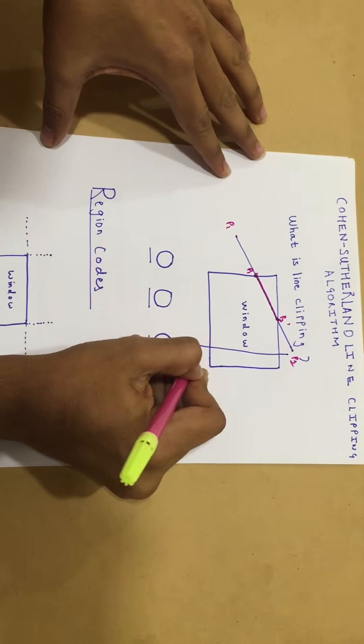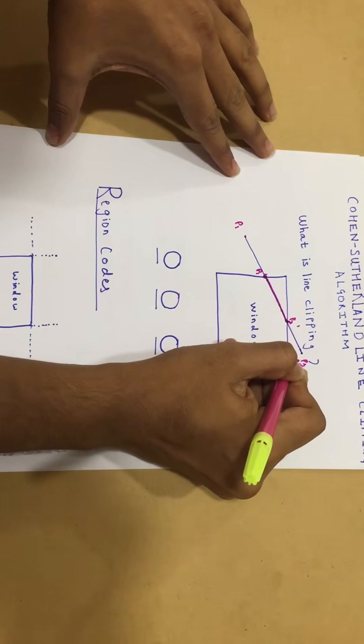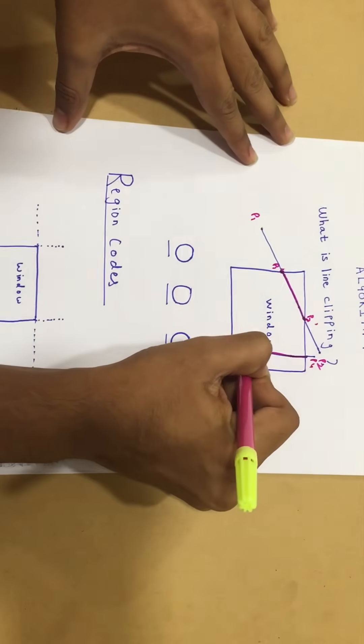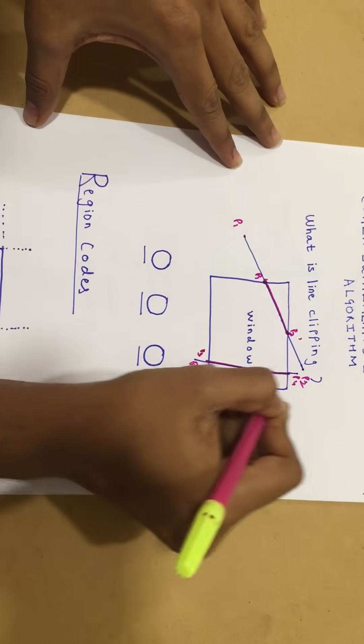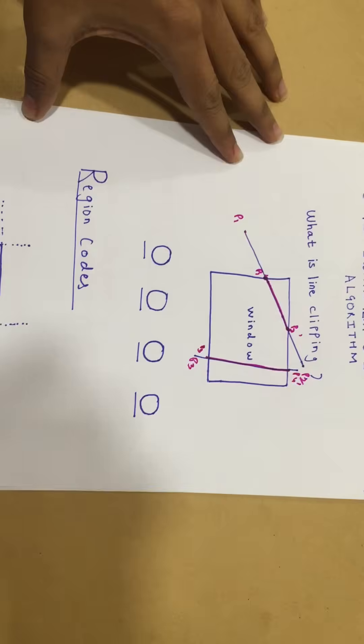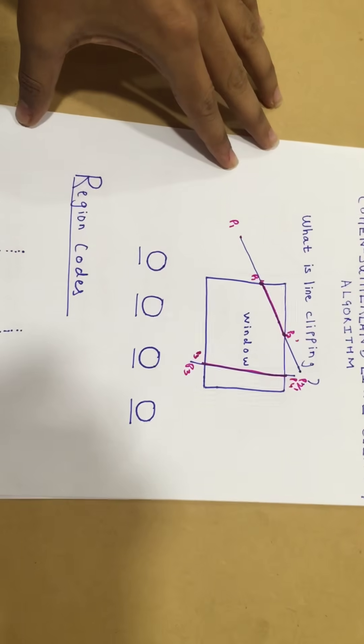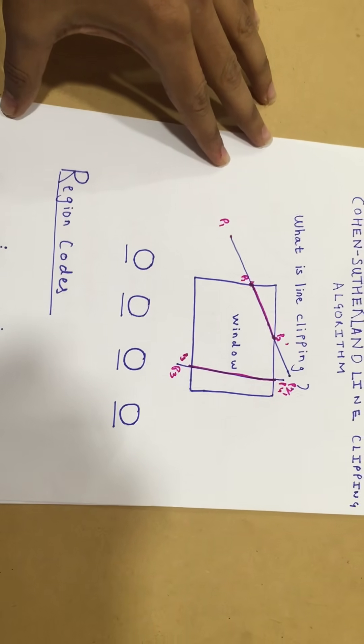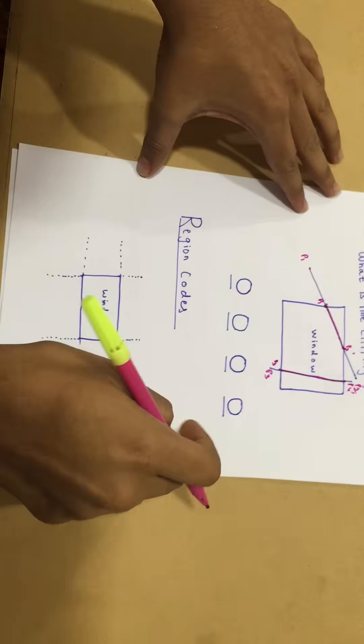Similarly, if I have two points P3 and P4, my clipped line would be P3' and P4'. Before we start and jump into the algorithm, we're going to learn a few analogies.